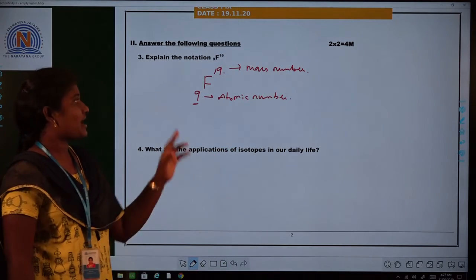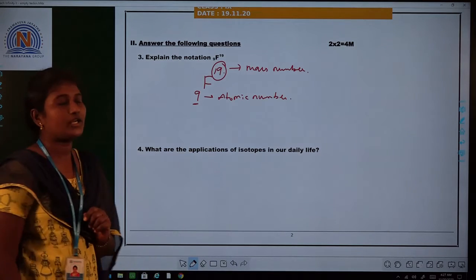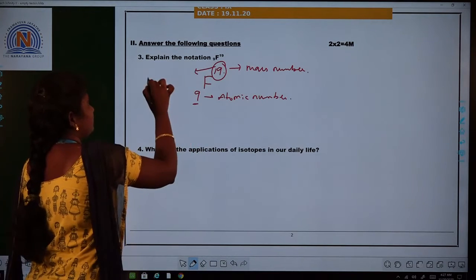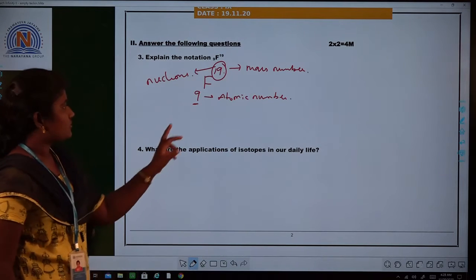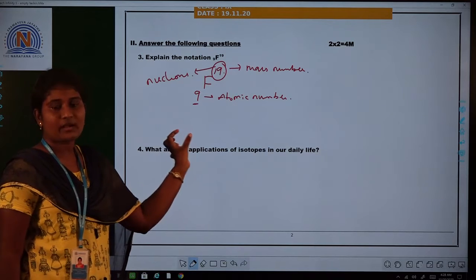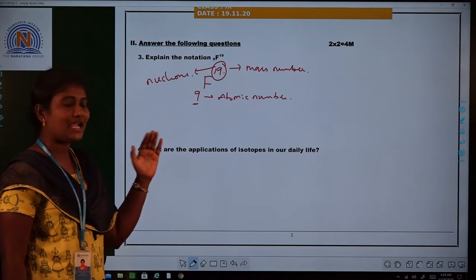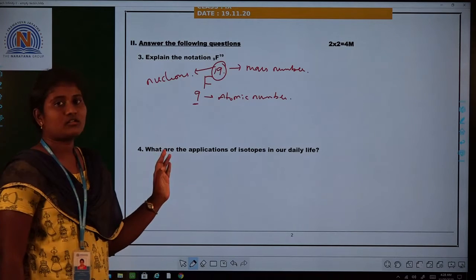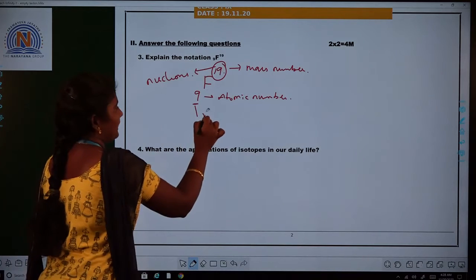The mass number is represented at the top of the element. So this is the mass number. The mass number—here 19—indicates the number of nucleons.